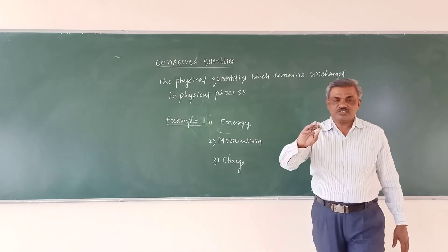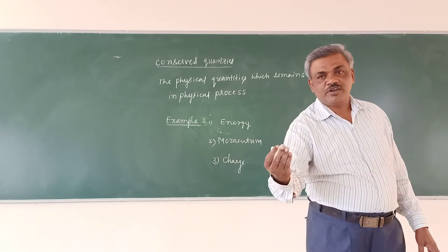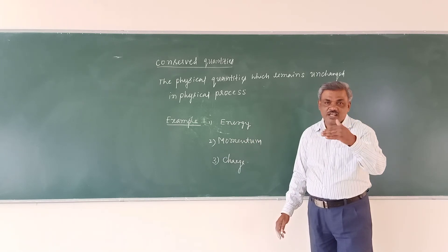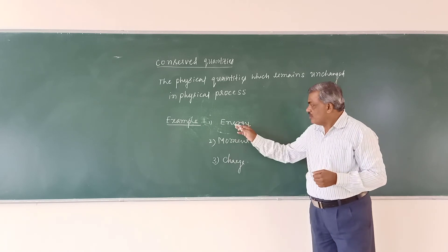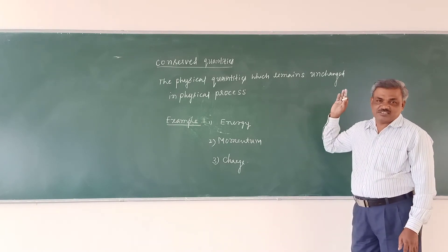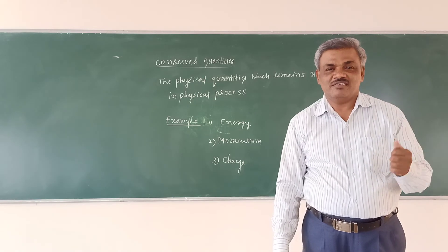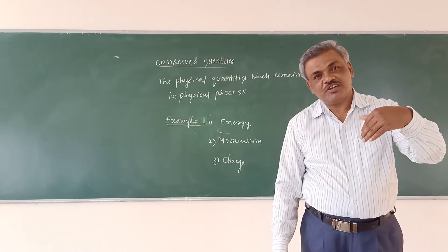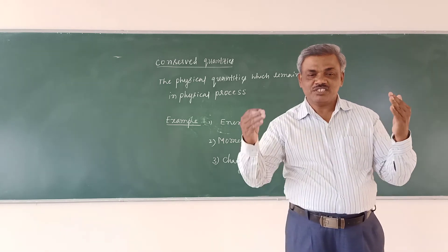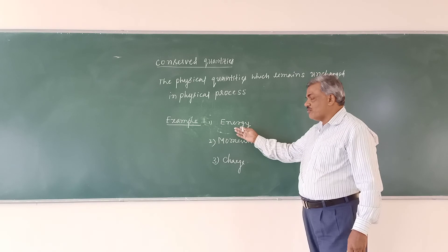Law of Conservation of Energy: energy can neither be created nor be destroyed. The total energy remains constant or conserved. For example, when you switch on a light, electrical energy is converted into light energy. When you switch on a fan, electrical energy is converted into mechanical energy. So energy can neither be created nor destroyed — the total energy remains constant or conserved.